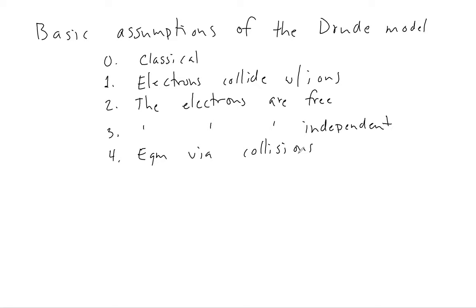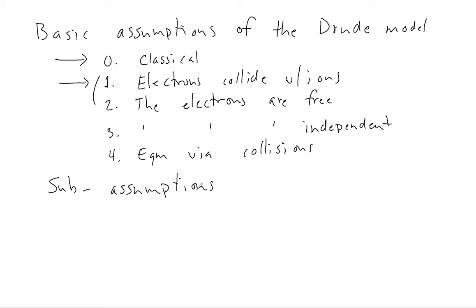We already took steps to relax assumption zero — this is what led us to include Fermi-Dirac statistics and what led us to Sommerfeld theory. Now we're going to start relaxing assumptions one and two, which are both related. There are some sub-assumptions or sub-questions that one has when thinking about these two assumptions.